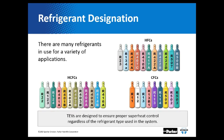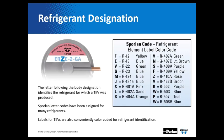Following the valve type in the nomenclature is our refrigerant designation. Refrigerants are abundant in the field — there are many different refrigerants in the industry for a wide variety of applications, and TEVs have to be designed to handle all these different refrigerants at the correct pressures and temperatures. As you can see, every refrigerant has its own different letter, and its own different colors as well. In this valve example — ERZE-2-GA — we know our valve type is ER, so Z is our refrigerant code. Looking at the code, Z is R-410A, and the color should be rose.